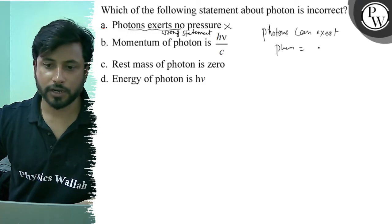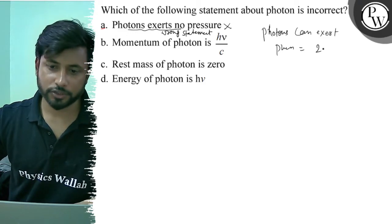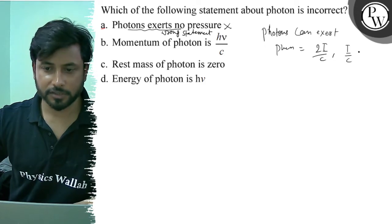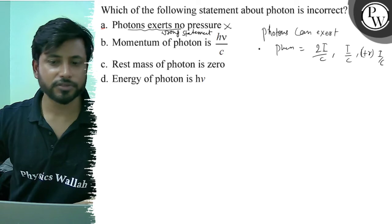Pressure equals to, if perfectly reflecting surface is 2I by C, perfectly absorbing surface is I by C, or 1 plus R, I by C. This is correct. Photons can exert pressure.